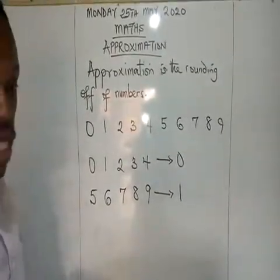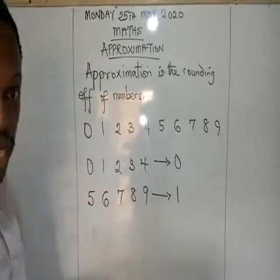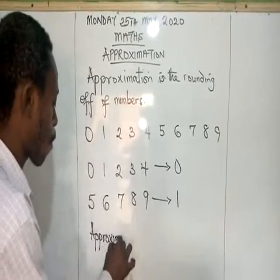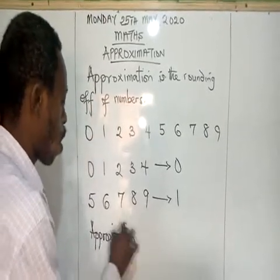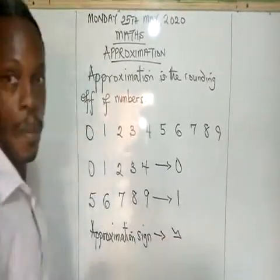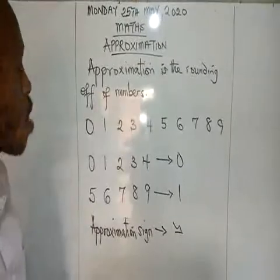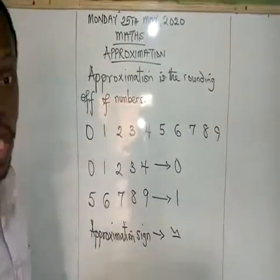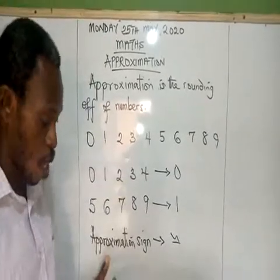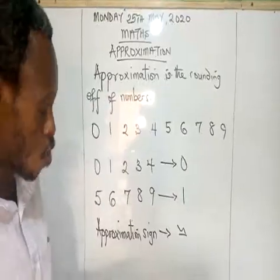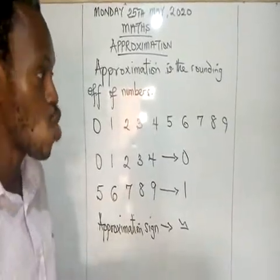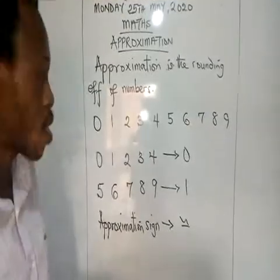Approximation does not use the equal sign. It has its own sign. There are words we can use when talking about approximation — words like approximation itself, estimation, rounding off, and correct to.